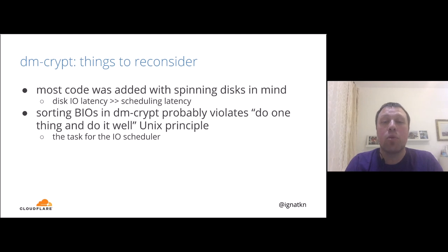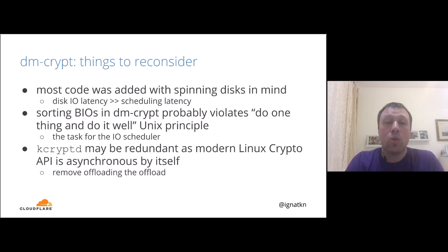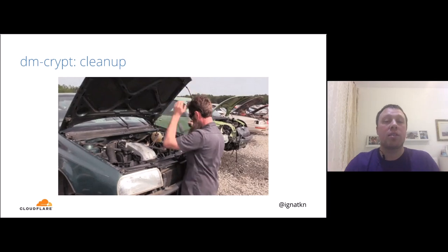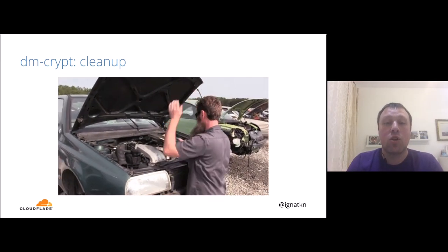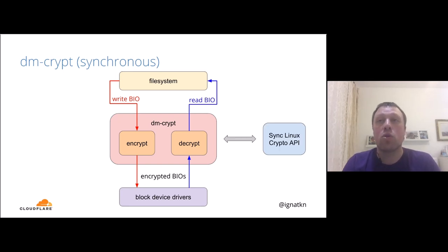Things to reconsider: most dm-crypt code was added with spinning disks in mind. Back then, disk IO latency was much higher than scheduling latency, so adding queues or threads solved problems. But that's not true for modern fast storage. Sorting IO requests in dm-crypt probably violates the Unix 'do one thing well' principle — sorting is a task for the IO scheduler, not a transparent encryption module. And the kcryptd work queue may now be redundant since modern Linux crypto API is asynchronous by itself.